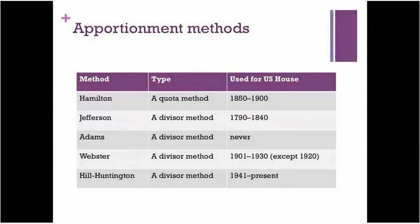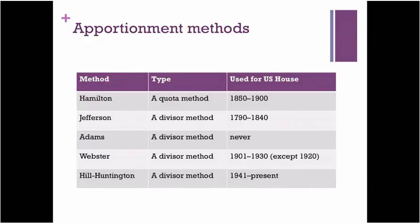We're going to learn apportionment methods named for each of these individuals: the Hamilton method, the Jefferson method, the Adams method, and so on. We'll also briefly learn about the Hill-Huntington method — the one method not named for any famous historical figure. There's a reference table you may want to return to later, which should be in your printed handouts. Each of these methods has actually been used historically for apportioning the US House of Representatives, with one exception: the Adams method was never used. The method still in use today, since 1941, is the Hill-Huntington method.